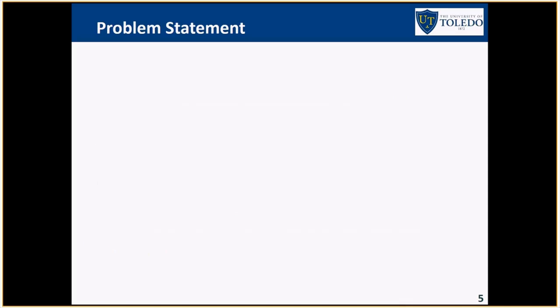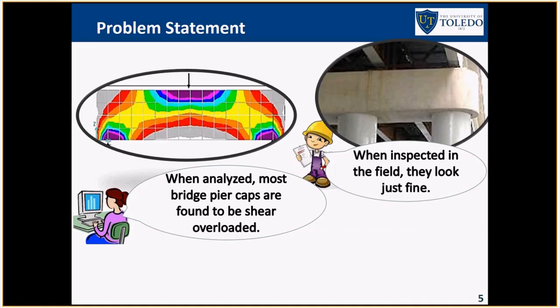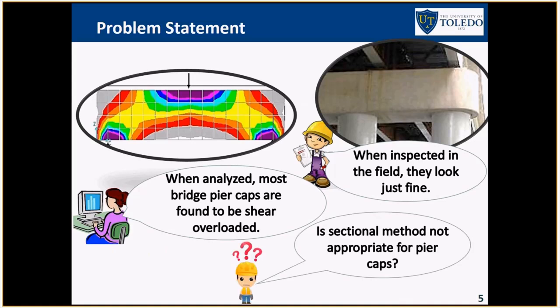The issue happens if you use this sectional method to analyze a deep member such as a pier cap. If that happens, you are going to find these members to be overloaded, especially the ones which were constructed 30 years or 40 years ago. However, if you go on site and inspect these bridges, you will see them. They are perfectly fine. They don't have any exhibit of distress, no cracking. They seem really fine. But when you do the sectional method, it gives you overload. So the research question is, what is going on? Why do we get low capacities, we find overloads using the sectional method. So that's the problem we try to tackle in this study.